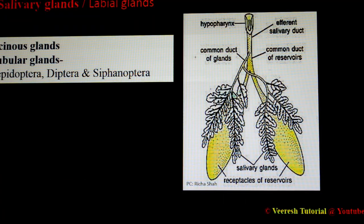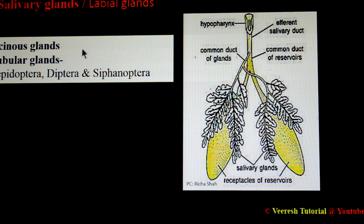Next are salivary glands, also called labial glands because in some insects the labial glands are modified salivary glands. A pair of salivary glands is present in insects; ducts from each gland join to form a single common duct opening just below the hypopharynx. There are two types: acinus salivary glands, which have a reservoir and are present in most insects, and tubular salivary glands, which have no reservoir and are mainly present in Lepidoptera, Diptera, and Siphonaptera.